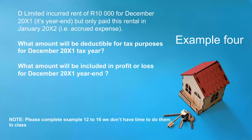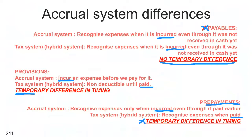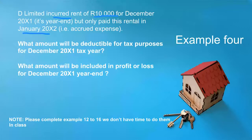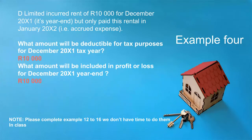Example 1 — Payable: D Limited incurred R10,000 rental for December 2001 but only paid it in 2002. Going back to our framework, this is a payable. Both the accountant and the tax man allow the deduction in the year incurred (2001), so there is no difference — both deduct R10,000.